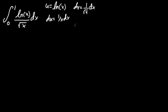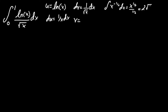Now we also have to integrate the dv term. The integral of x^(-1/2) dx equals x^(1/2) divided by 1/2, which equals 2√x. We don't need the plus C since we have definite boundaries, so v = 2√x.